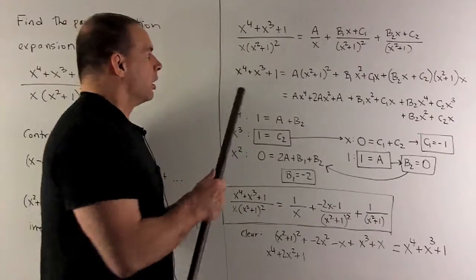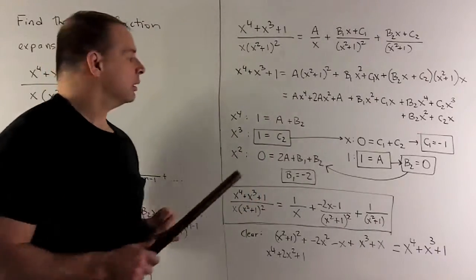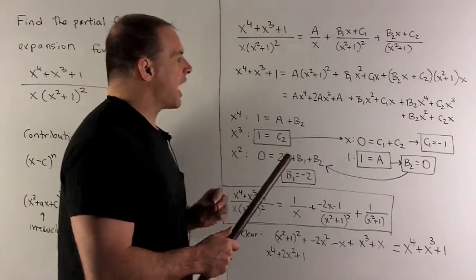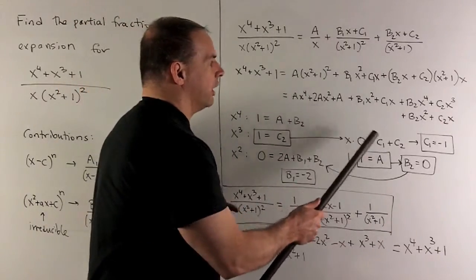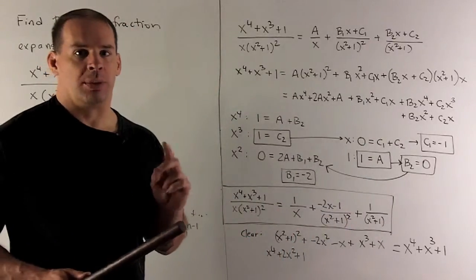For x squared, there's no x squared here. So that means the coefficient is 0. On the other side, we're going to have 2A, b1, and b2. So we have 0 equals 2A plus b1 plus b2.